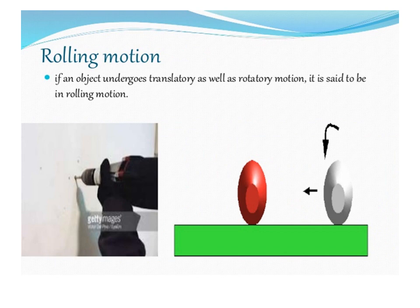If an object undergoes translatory as well as rotatory motion, it is said to be in rolling motion. For example, as you see in the pictures, a circular plate moving along a straight path undergoes two types of motion — it goes forward, that is translatory motion, and it also rotates, that is rotatory motion. We can also say the motion of the wheel of a car is both translatory as well as rotatory motion. This motion is known as rolling motion.